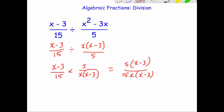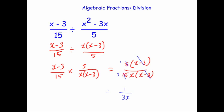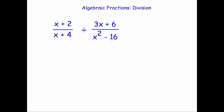Now we cancel down: the (x minus 3) factors cancel, and 5 over 15 cancels down to one third. So the answer is 1 over 3x. That's how you divide those fractions.